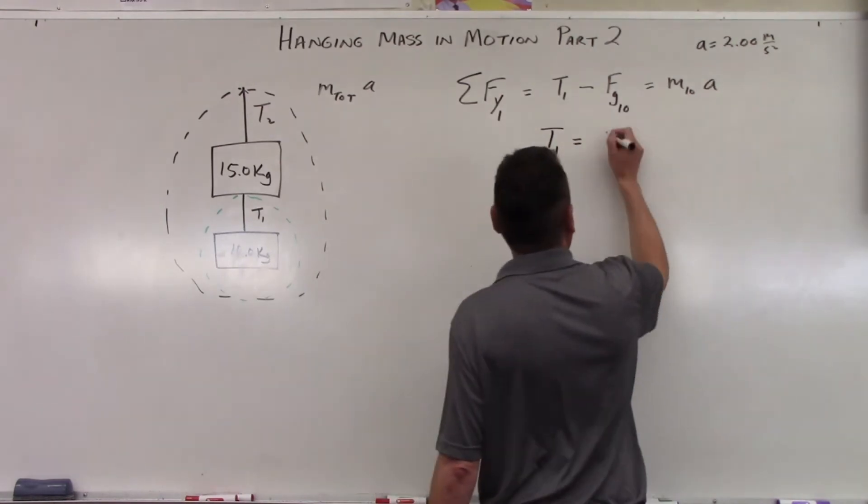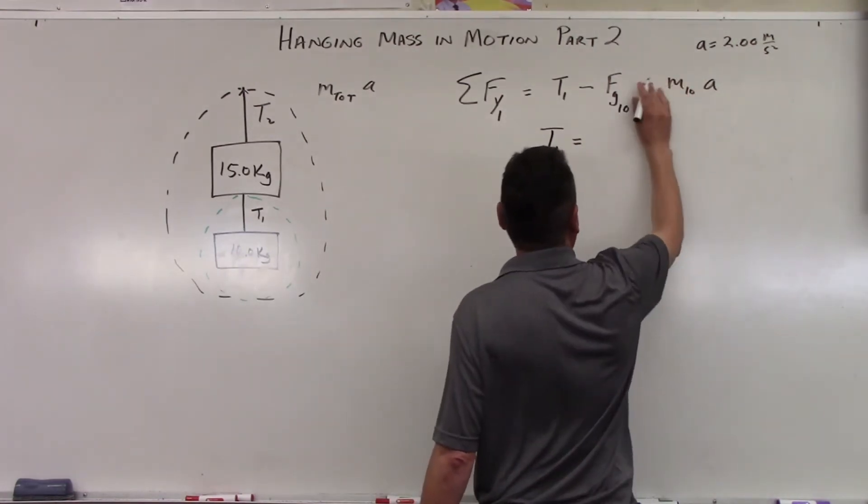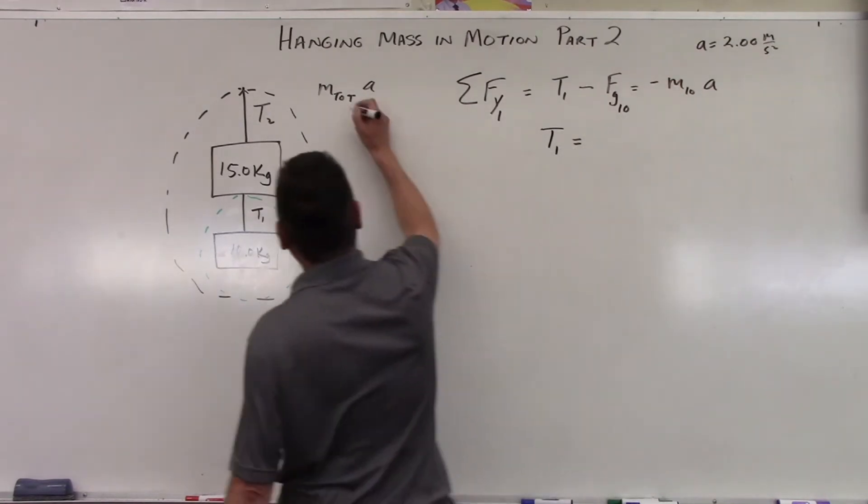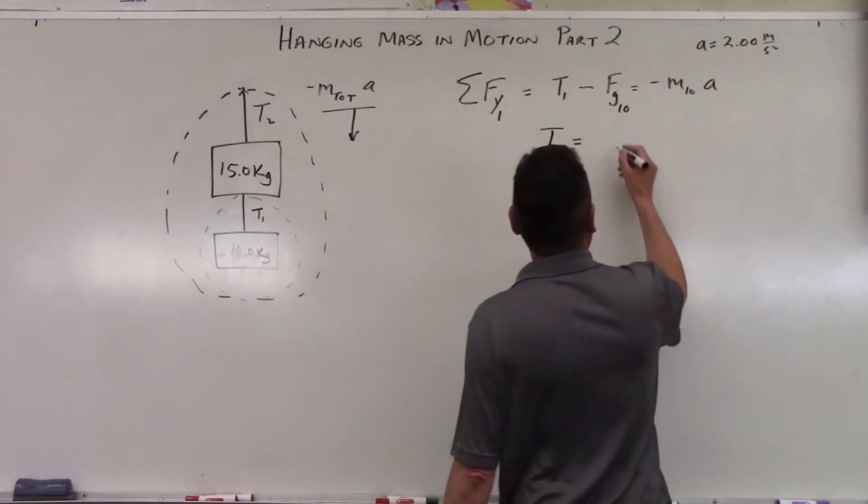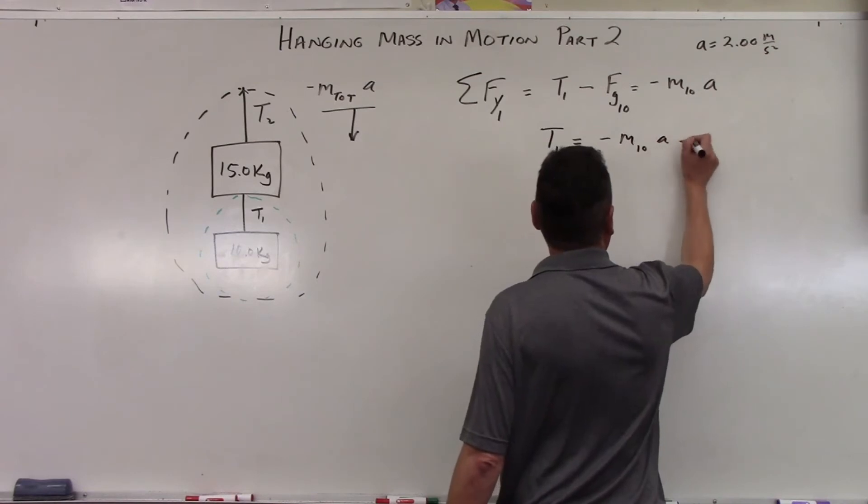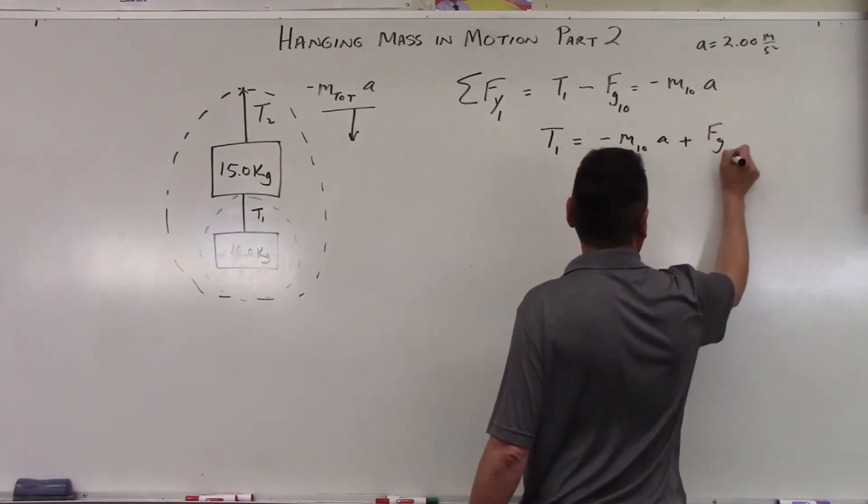We'll keep A at 2.00 meters per second squared. Now let's solve for T1. And this is negative. Let's not forget, this object is moving downward. So we stated that it's moving downward. So therefore this is negative.